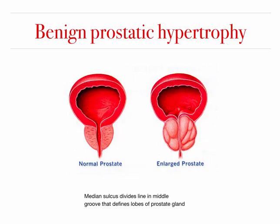This is an example showing a normal prostate versus an enlarged prostate. The urethra runs right through the prostate, which is why BPH causes urinary symptoms — a weak flow or difficulty initiating a stream due to compression from the enlarged prostate.